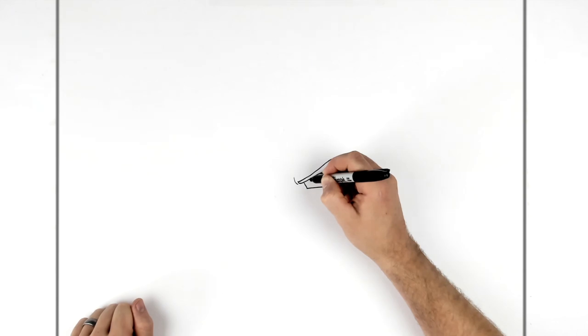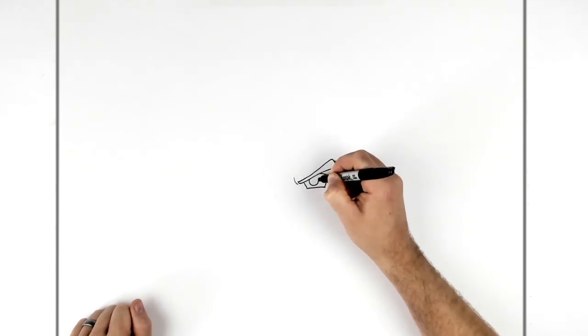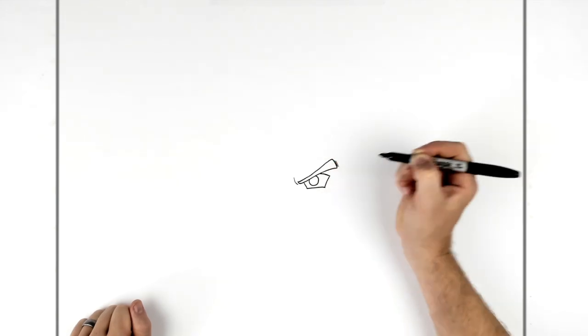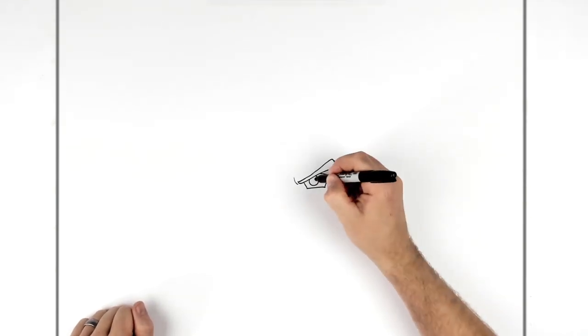And then his iris, coming down from his eyebrow, you just do a circle around here. And then his pupil in the middle, just a black circle in there.